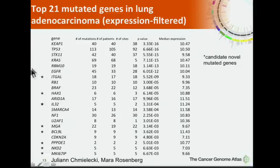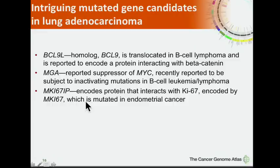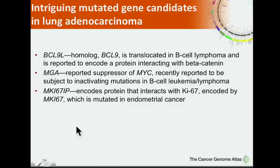I want to highlight some candidate novel genes. BCL9L is homologous to the B-cell lymphoma translocated gene BCL9, and encodes a protein interacting with beta-catenin, which is also frequently mutated in lung and other cancers. MGA encodes a reported suppressor of the MYC pathway and has recently been reported to be subjected to inactivating mutations in B-cell leukemias and lymphomas. MKI67IP encodes a protein that interacts with Ki-67, the well-known histological proliferation marker.